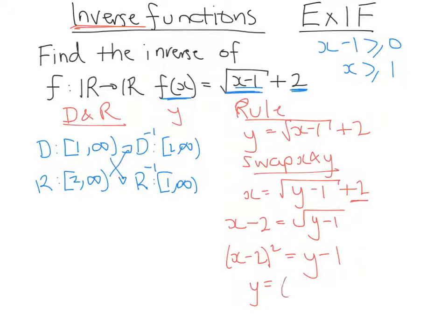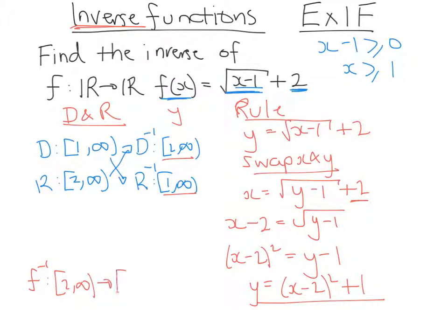Squaring both sides gives us x minus two all squared, and we get y is equal to (x minus two) squared plus one. Now we know the domain and range of the inverse and the equation for the inverse. The other thing you need to know about inverses is that they make mirror images of each other about the line y equals x.